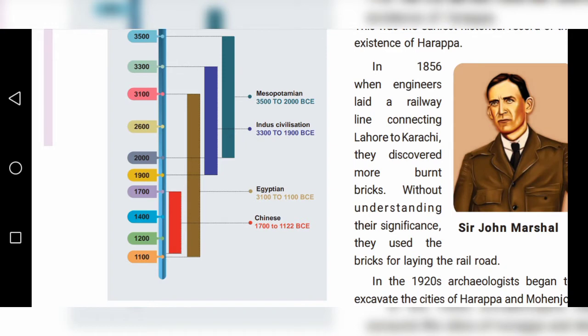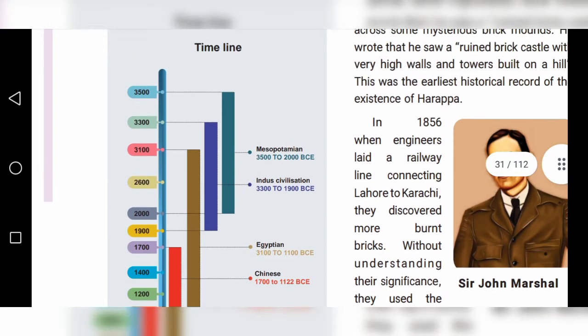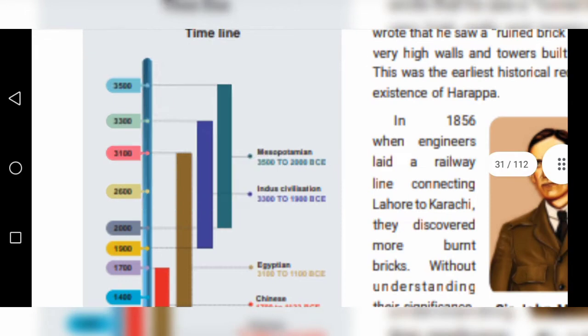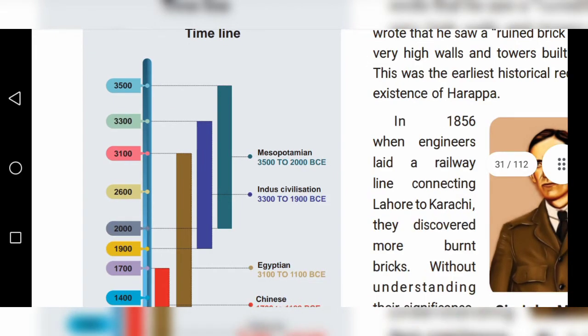In this lesson we are going to study about the Indus Civilization, which existed from 3300 to 1900 BCE — that means Before Common Era.